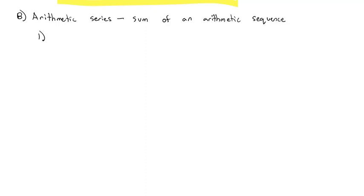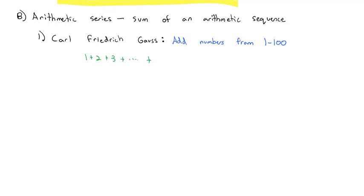A great example comes from math history with a mathematician named Carl Friedrich Gauss. Carl Friedrich Gauss was an unruly student, and his teacher was very frustrated with him one day. So his teacher put him in the corner and said: you have to stay there until you add all the numbers from 1 to 100 — 1 plus 2 plus 3 plus 4 plus 5 plus 6, all the way up to 98 plus 99 plus 100. As is common with misbehaved children in elementary school, they're often very smart, and that was really the case with Carl Friedrich Gauss.